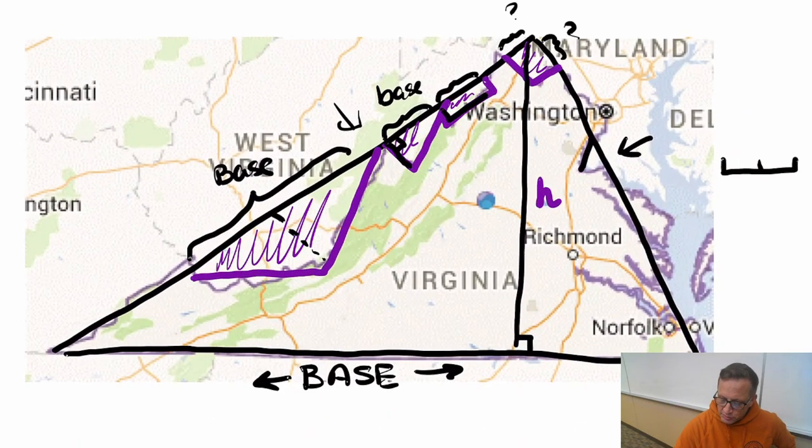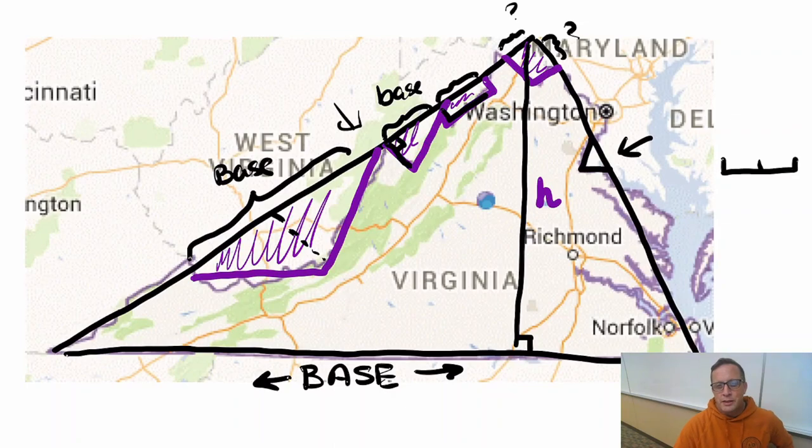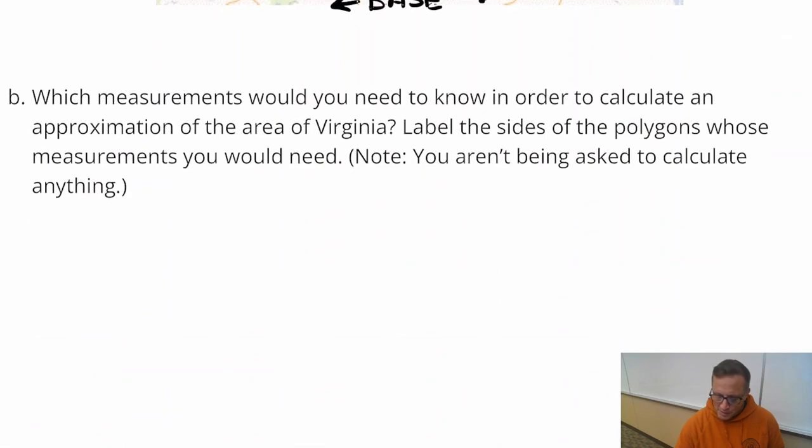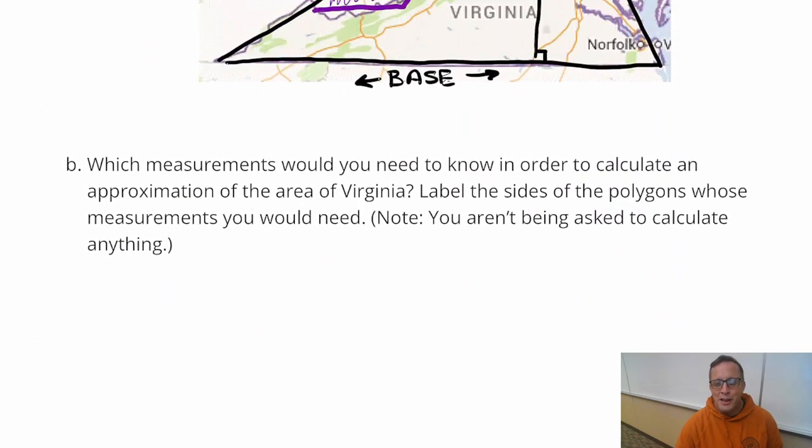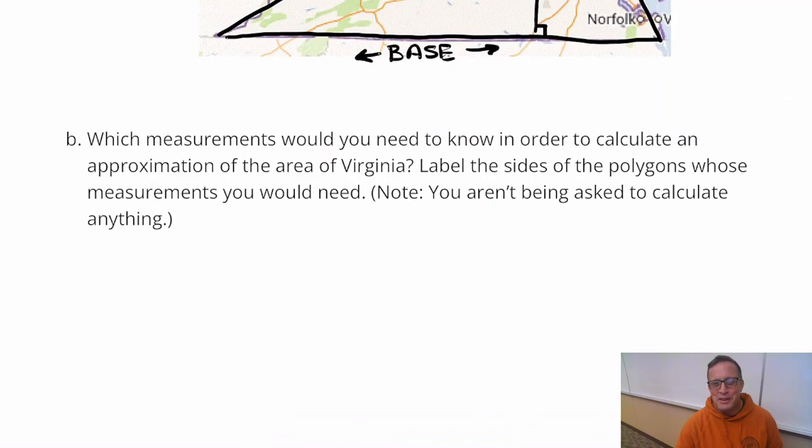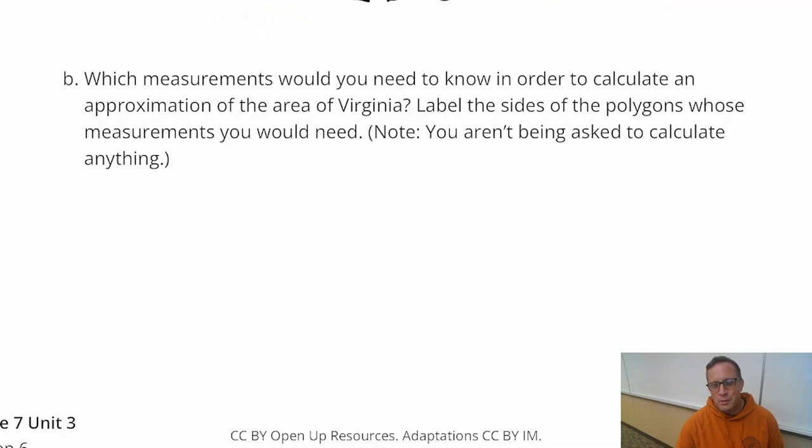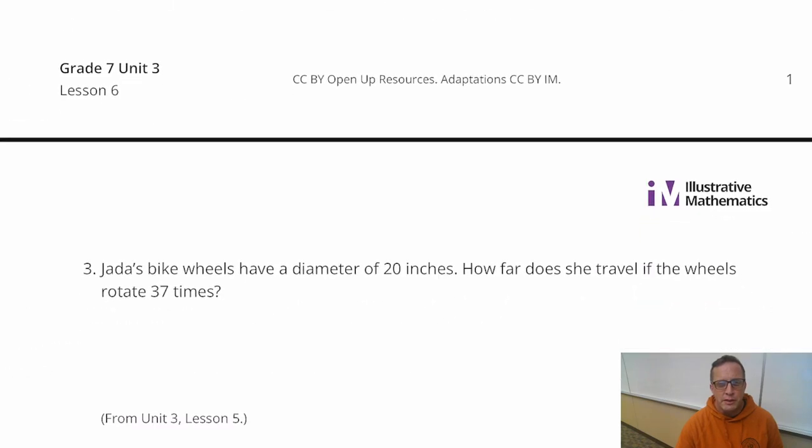It would have been better if this problem was Tennessee. Tennessee looks like a parallelogram. Maybe that's because it's too easy. Or Colorado. Or Wyoming. Those are just rectangles, right? That's easy.